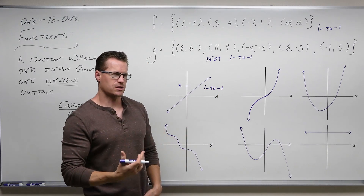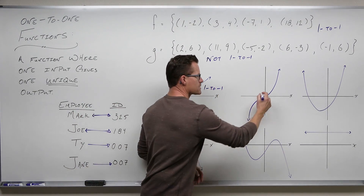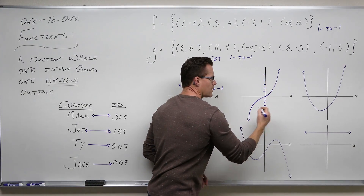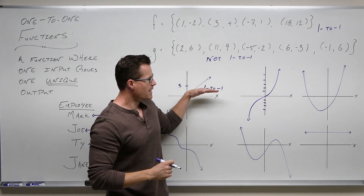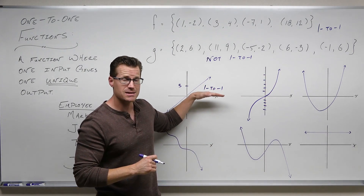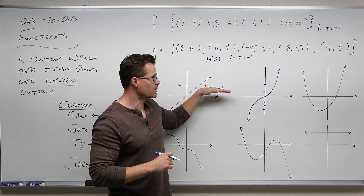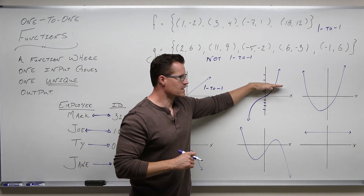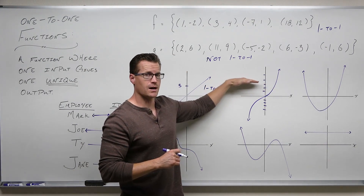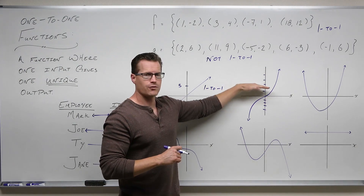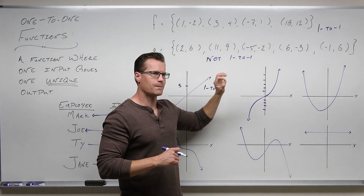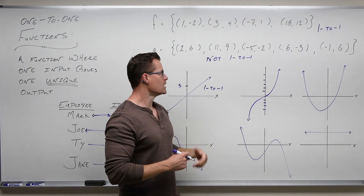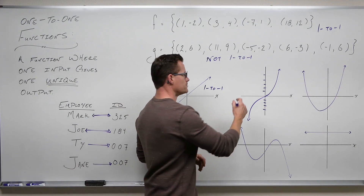The first graph is one-to-one. The next graph is also one-to-one. If I imagine all the possible values along the y-axis and horizontal lines at each level, I'm only intersecting the graph once at each level. That means there's only one point representing each output value, so this is a one-to-one function as well.